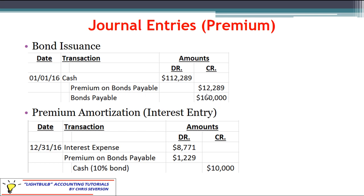The difference for a premium will end up going on the credit side — it's the difference between the issue price and the liability face value, so we would have a premium of $12,289. That premium goes on the credit side. It is considered an adjunct liability account, meaning it adds to the value of the liability. That carrying value in this case would be $112,289.